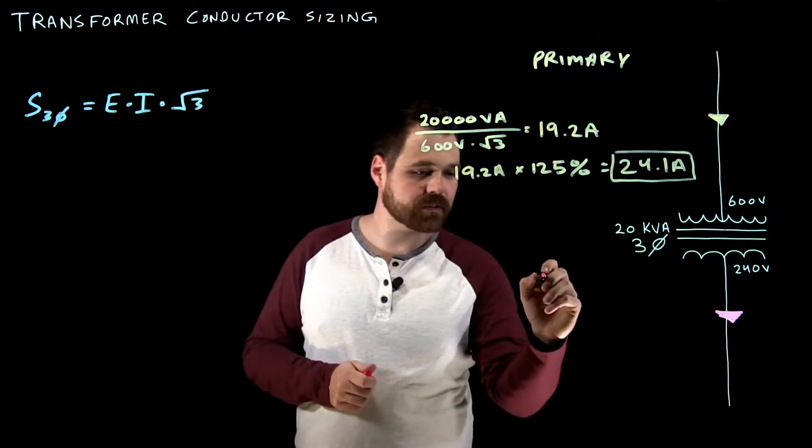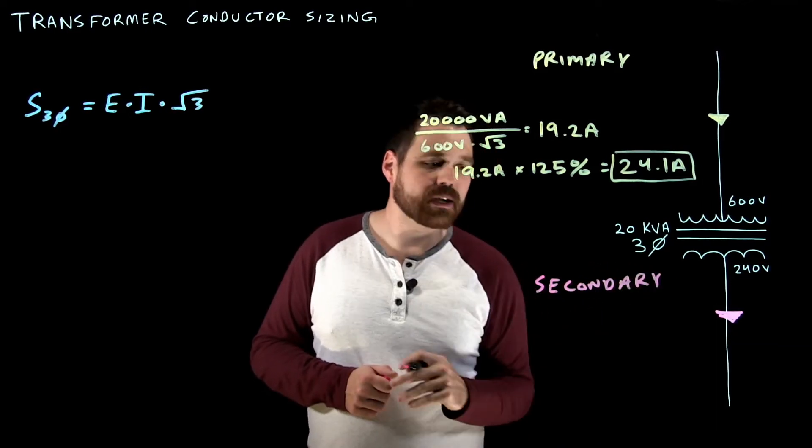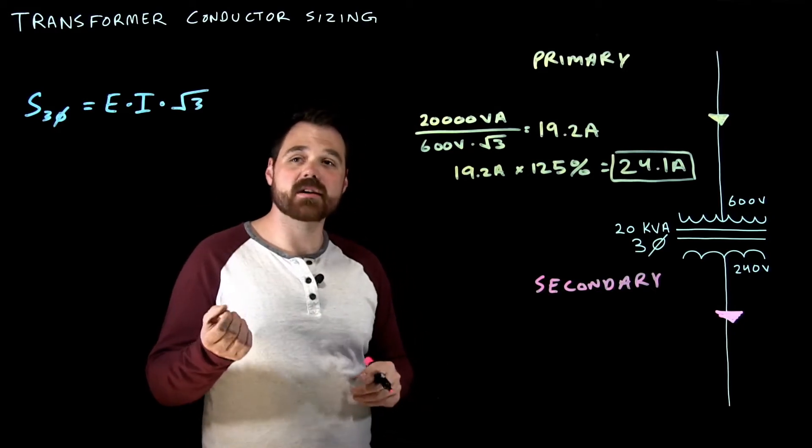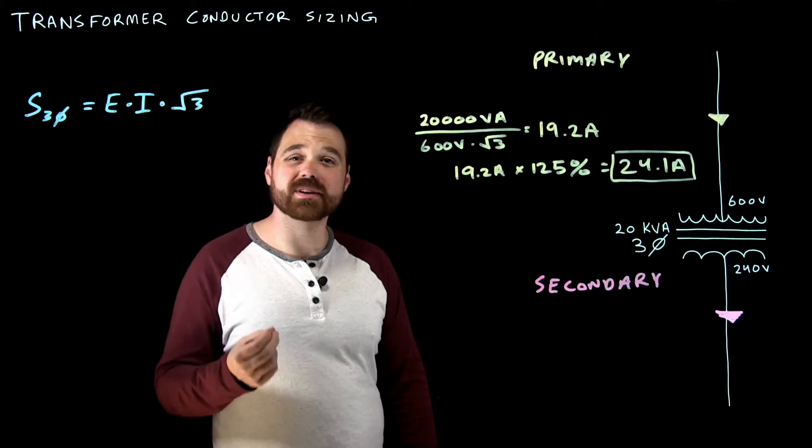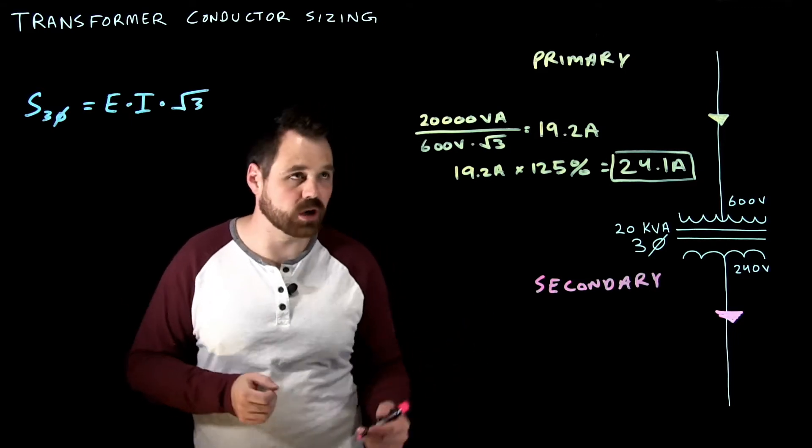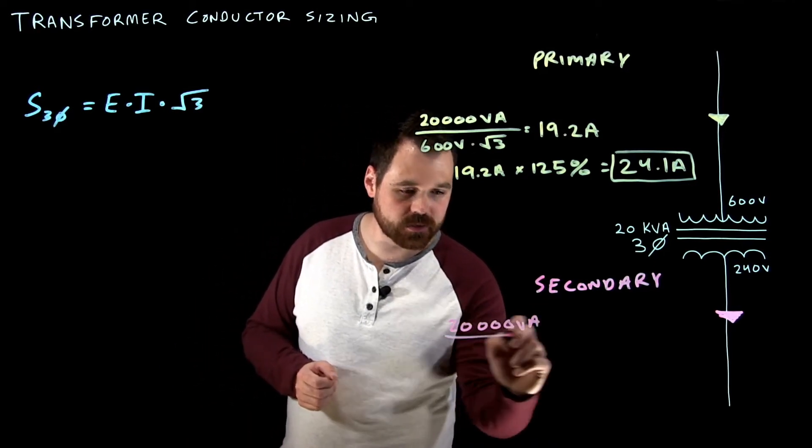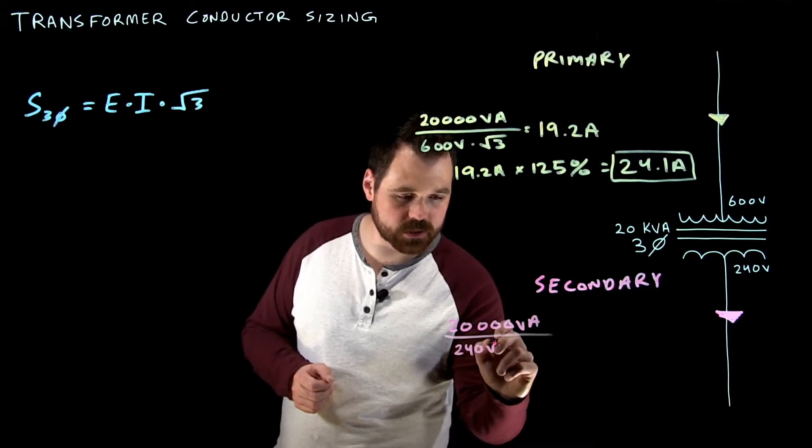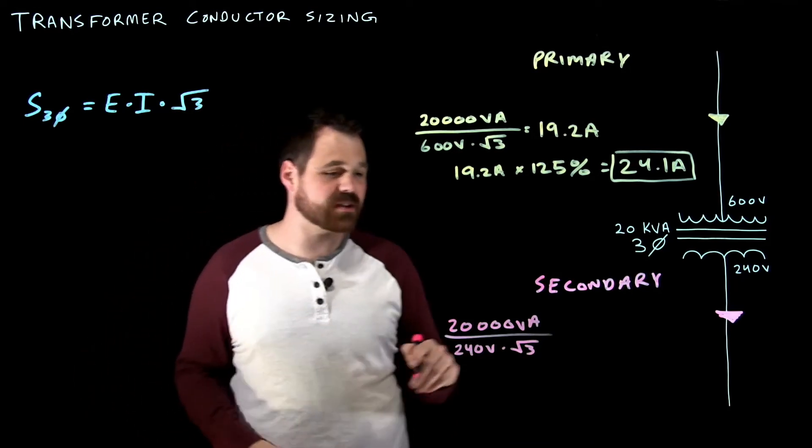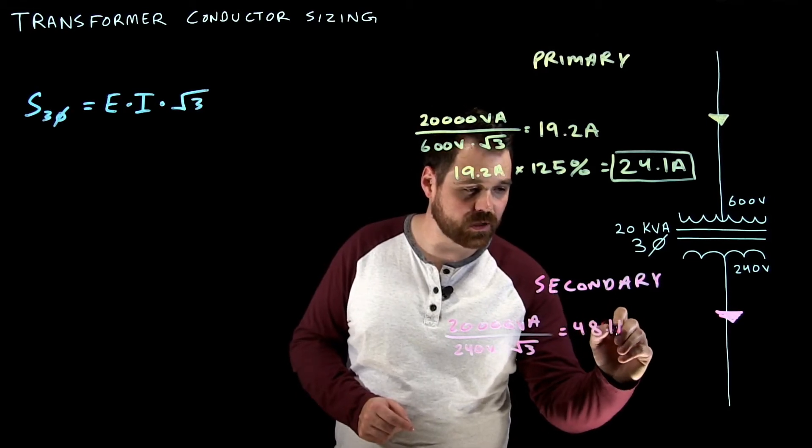That brings us down to the secondary. Now the secondary is actually the exact same process. So it tells us that the secondary conductors need to be rated for 125% the rated secondary current of the transformer. So do the exact same process 20,000 VA divided by 240 volts. Again, we don't want to forget that root three because we are talking about a balanced three phase system here.